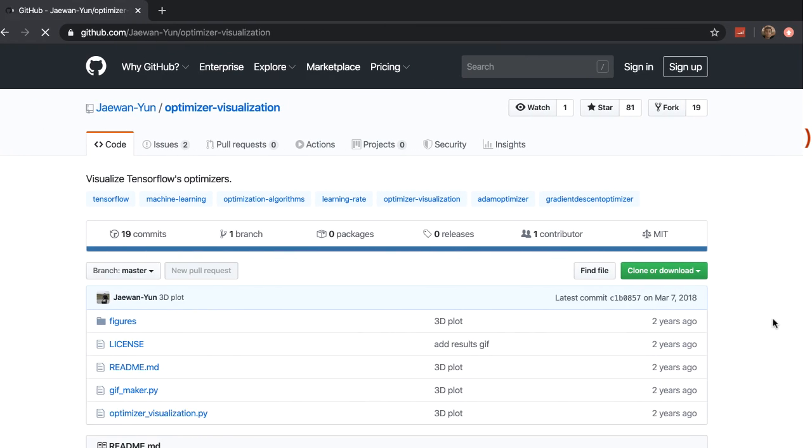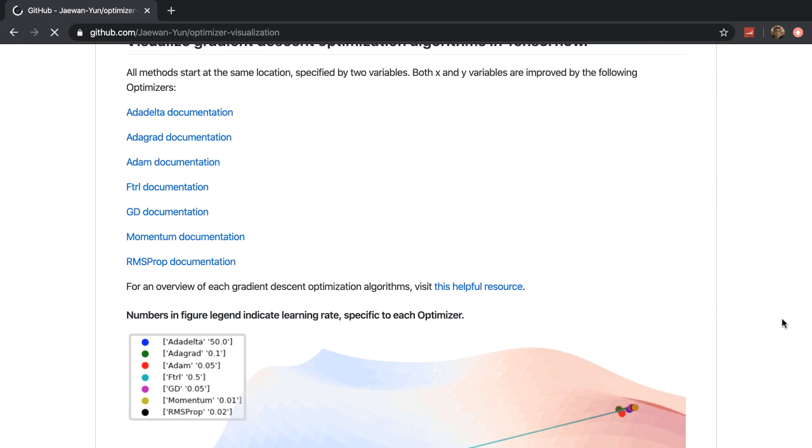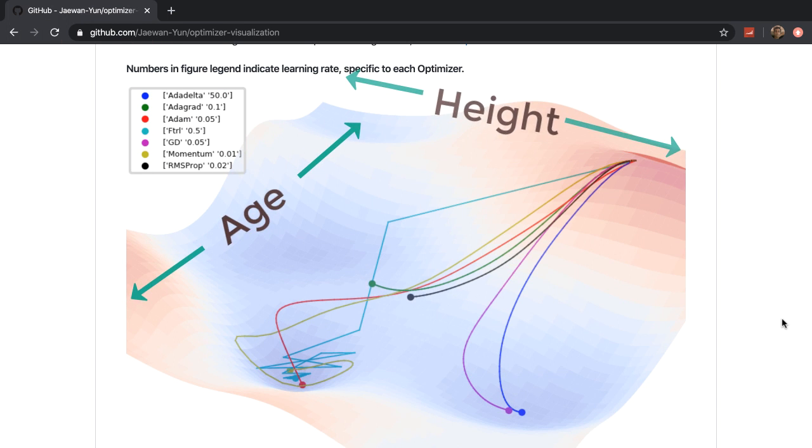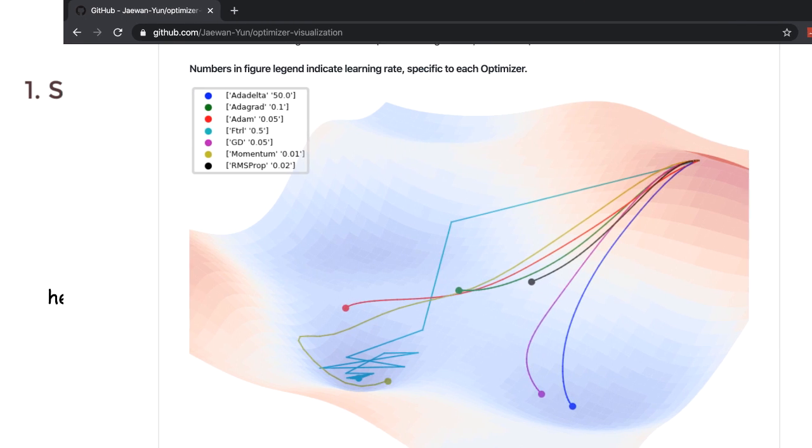That said, we could also use adaptive learning rate optimizers like Adam, where we have one learning rate for age and another learning rate for height. However, it's still better practice to normalize your data before feeding it into your network. So yeah, normalization speeds up training your neural network.